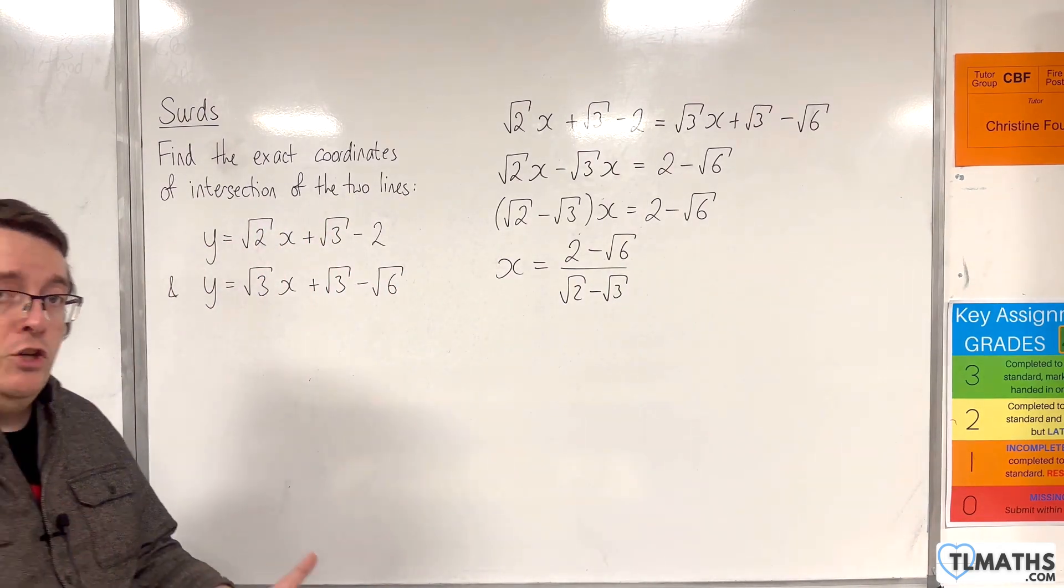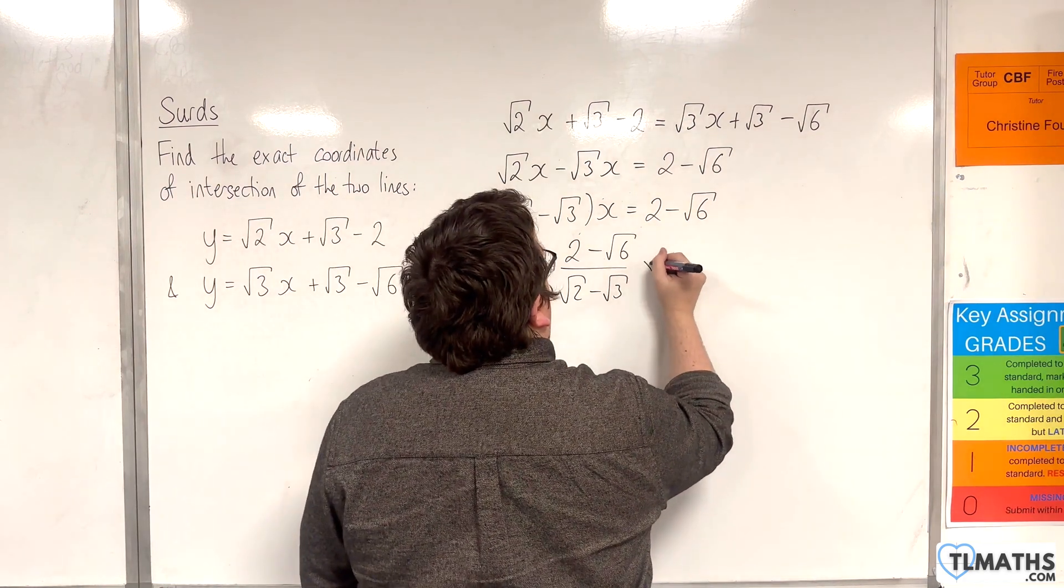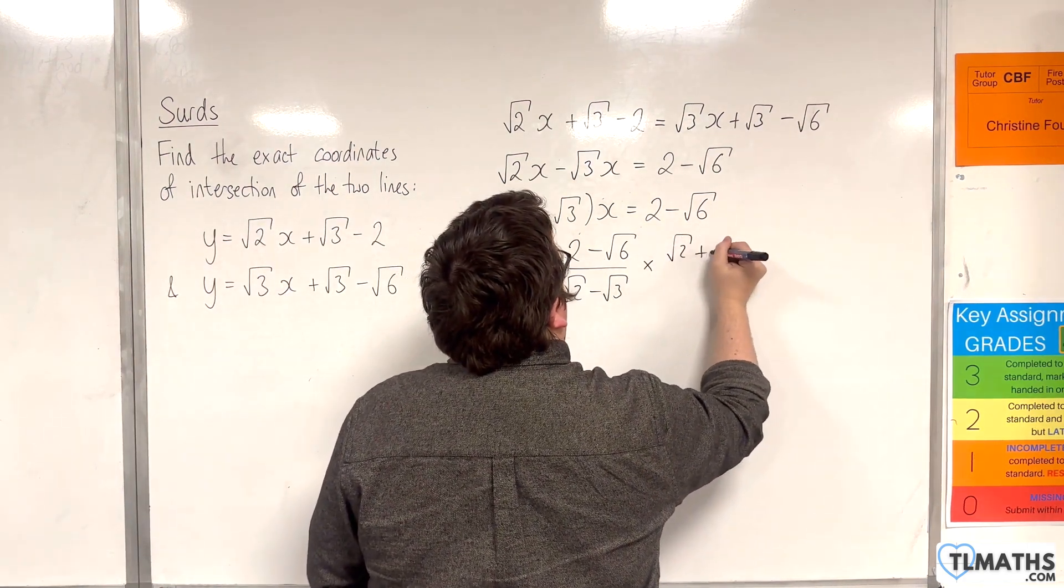Now I'm going to rationalise the denominator, multiply top and bottom by root 2 plus root 3.